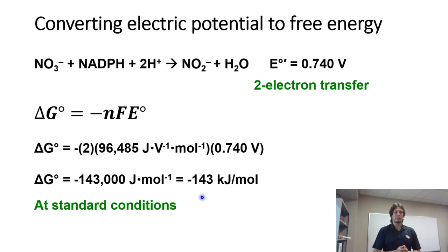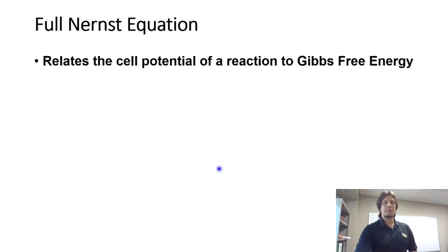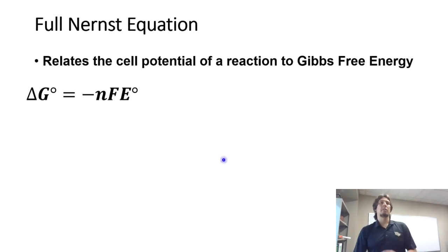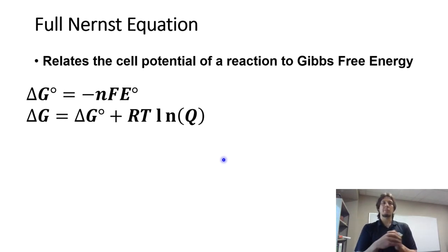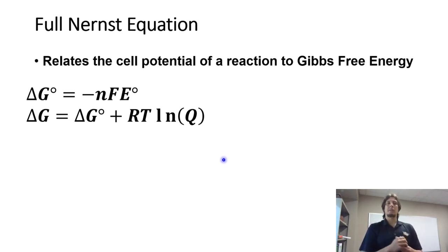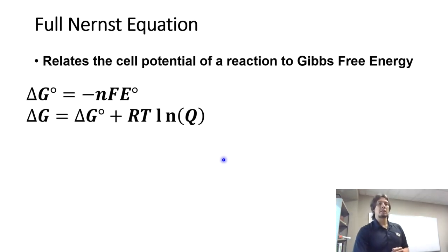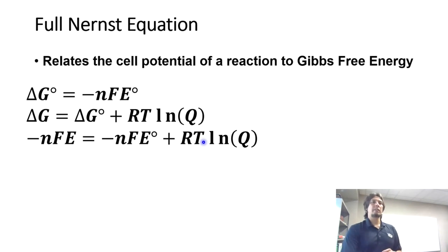What do we do if we're not at standard conditions? We can do something very similar to what we did with Gibbs free energy under non-standard conditions. The full Nernst equation starts with delta G equals negative n times F times E, and then uses the relationship delta G equals delta G-not plus RT times ln of Q, allowing us to find delta G at any condition when temperature or concentrations differ from standard.